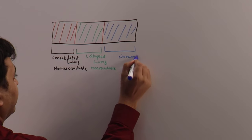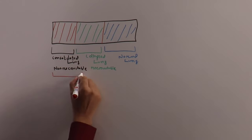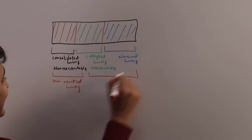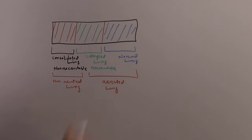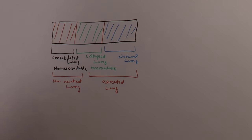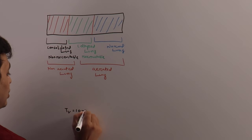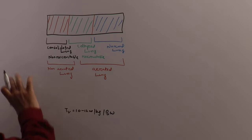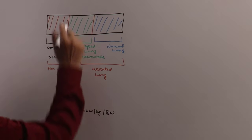If you further divide into two parts, one is the non-aerated lung, and the other is the aerated lung. These lung units can be recruited. Now, in a normal patient, if you use a tidal volume of 10 to 12 ml per kg body weight, it will distribute to the whole of the lung — every part of the normal lung.